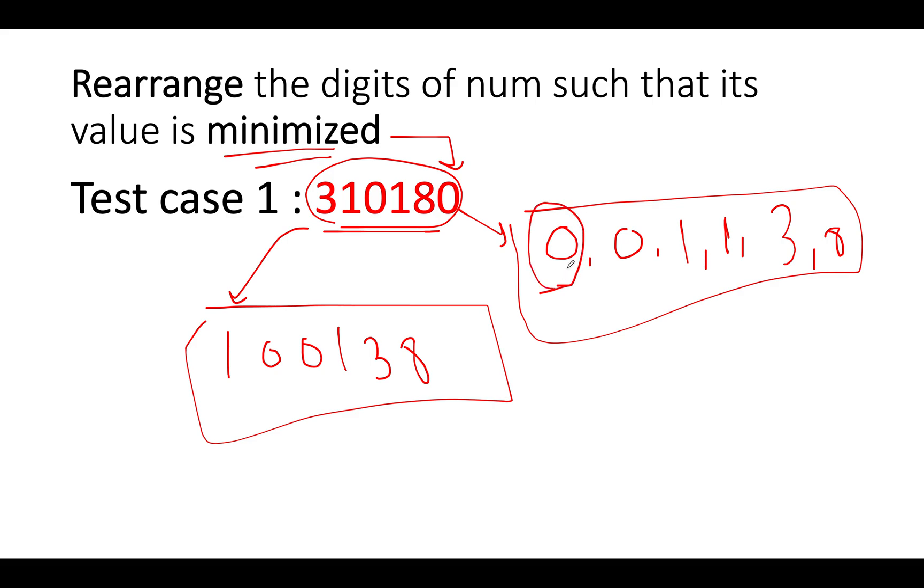Now what do we need to do next? Obviously the number can't begin with zero because the value will be lost. We have to move to the position till we don't find a non-zero value. Where do we find non-zero value here? So what we can do we can simply swap the starting position which is occupied by a zero and this one. So these two get swapped and what do we get? Now we have 1, 0, 0, 1, 3, 8.